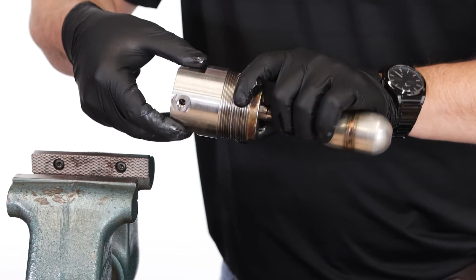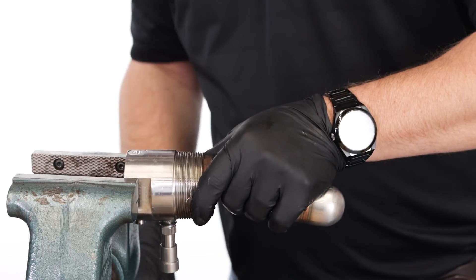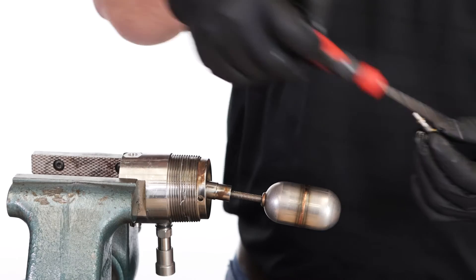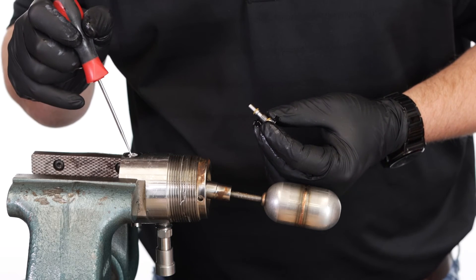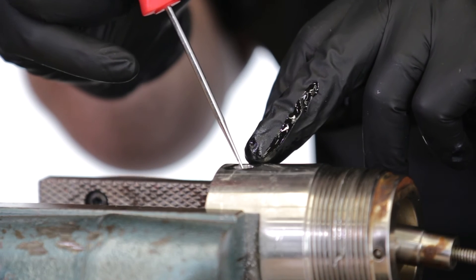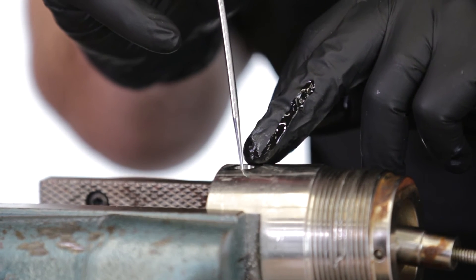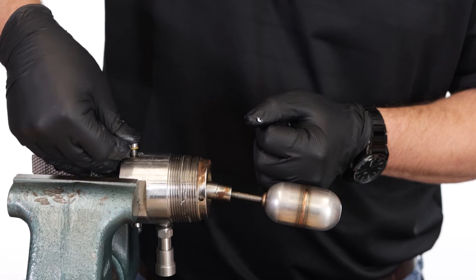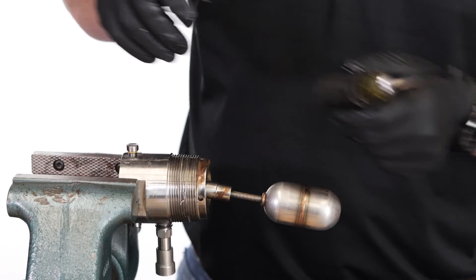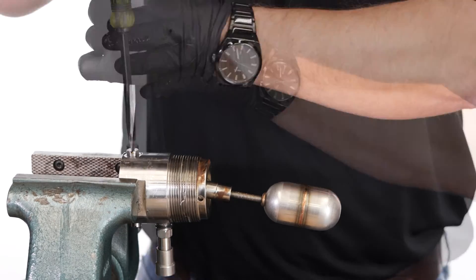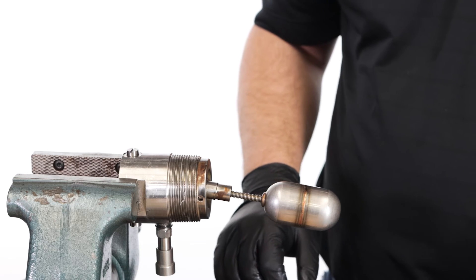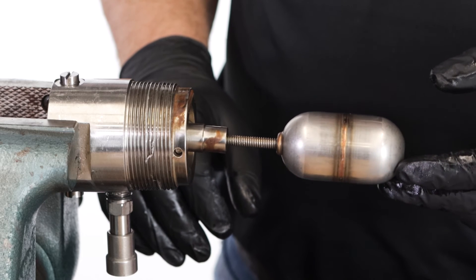Tighten the first seat in place with the flathead screwdriver. Flip the housing around and insert the shuttle. Make sure that the shuttle is fully inserted. Install the second seat and fully tighten it with the screwdriver. If you've installed it correctly, you can hear a faint click sound when the float is moved, telling you that the shuttle can freely move.